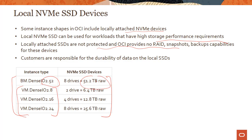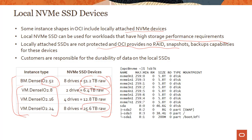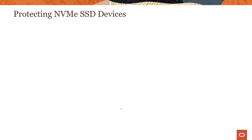Instances that support local SSDs include bare metal Dense IO shapes and virtual machine Dense IO shapes, with sizes ranging from 51 terabytes down to 6.4 terabytes for the smallest shape. If you SSH into one of these instances and run `lsblk` to list all block devices, you can see the NVMe devices listed there — fairly straightforward.